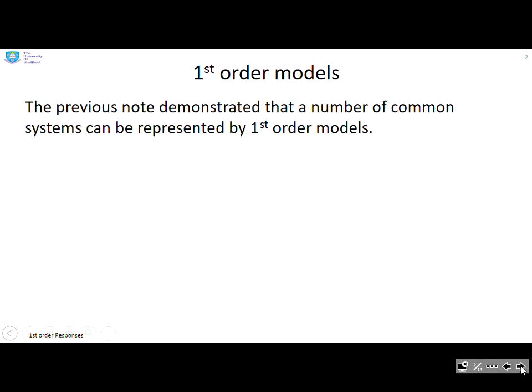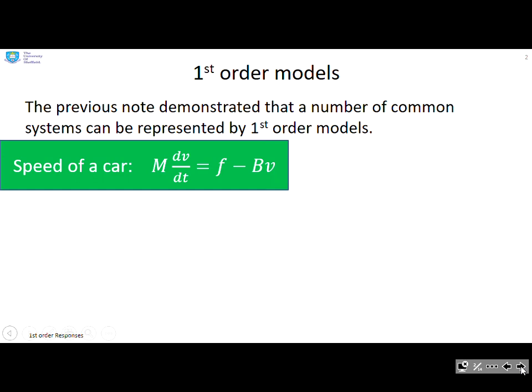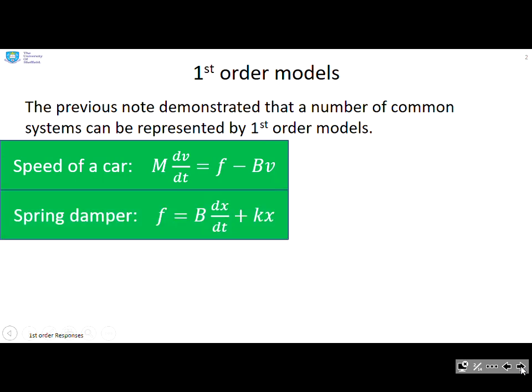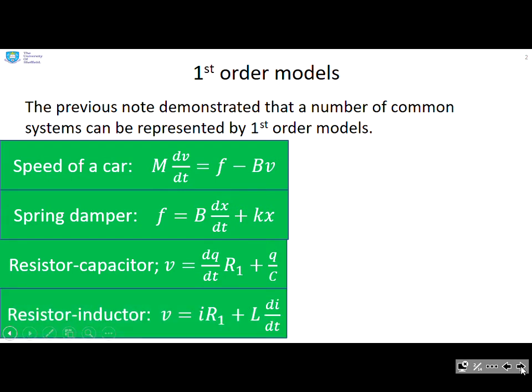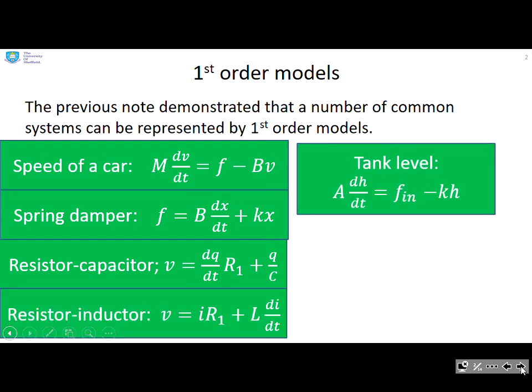A previous note demonstrated that a number of common systems can be represented by first order models. For example, the speed of a car has this model here, a spring damper has this model, a resistor capacitor this model, a resistor inductor this model, and tank level has this model.